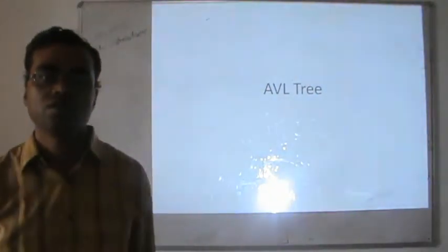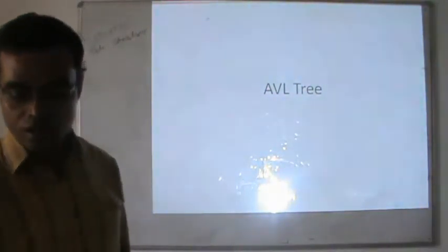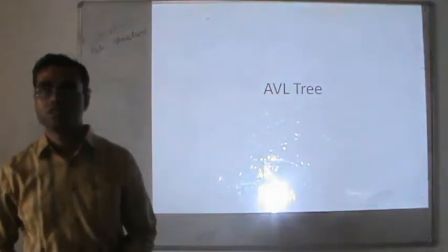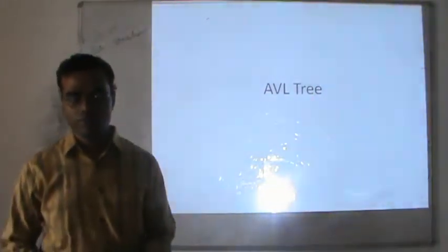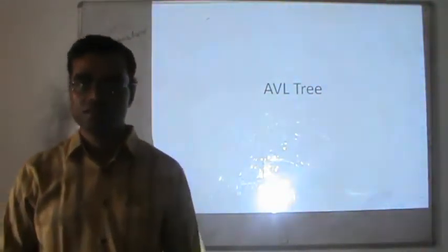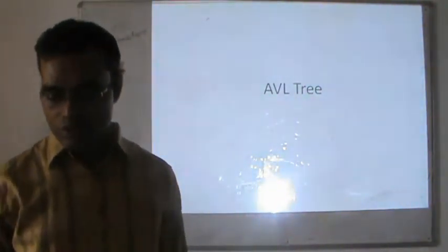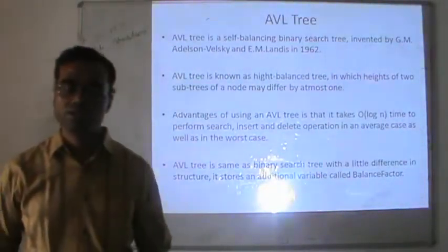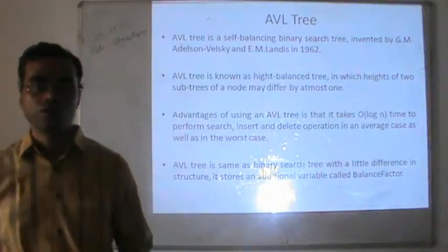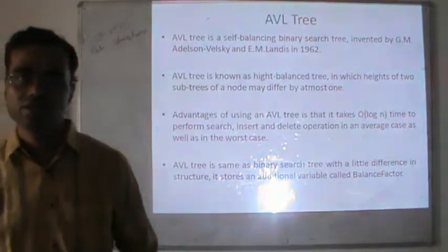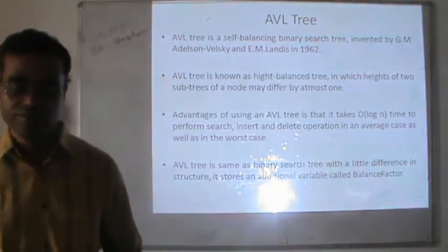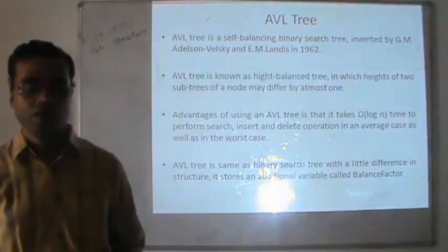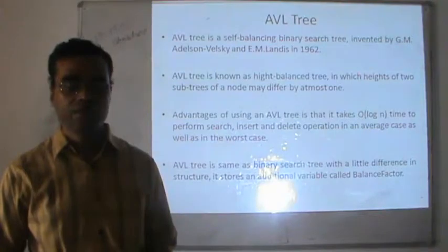The next topic we are going to discuss is the AVL tree. As we discussed the basic concepts of the tree and studied various different kinds of trees, in the previous lecture we covered the binary search tree. The AVL tree is another modification of the binary search tree. It is a self-balancing binary search tree, invented by Adelson-Velsky and Landis in 1962.